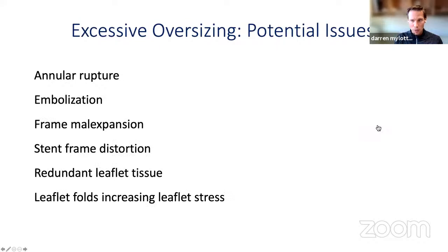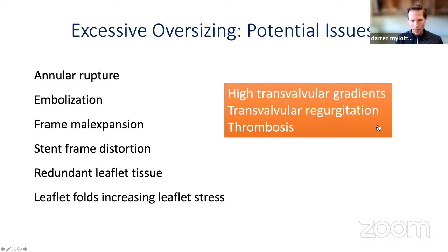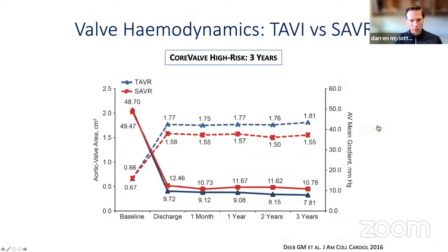If we take a valve that is too big, we risk annular rupture, potentially embolization like the champagne cork case I showed, frame mal-expansion — which is associated with subclinical leaflet thrombosis and potentially durability issues — frame distortion, redundant leaflet tissue causing increased stresses and strains on the leaflet, and leaflet folds. This can lead to high transvalvular gradients, transvalvular regurgitation, thrombosis, and all of these can have an impact on durability.